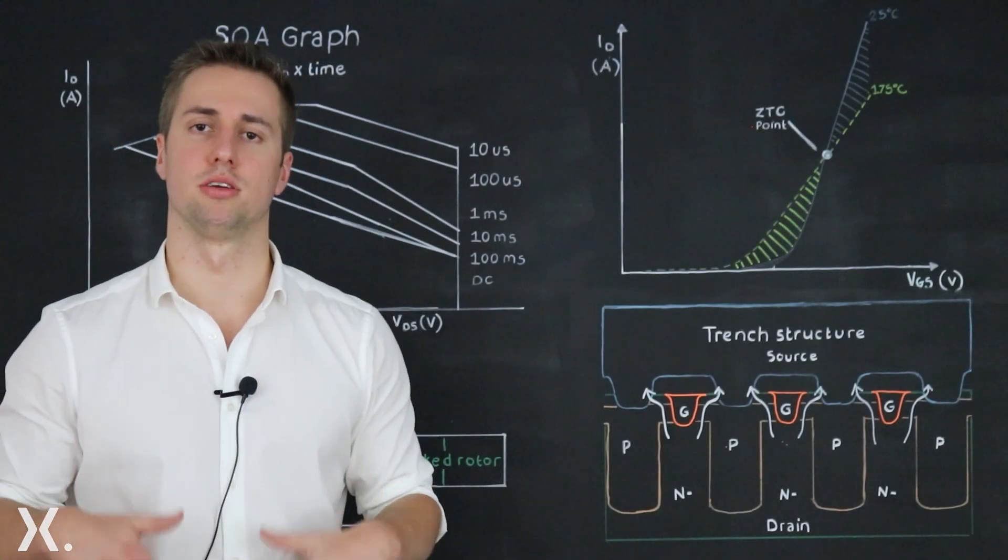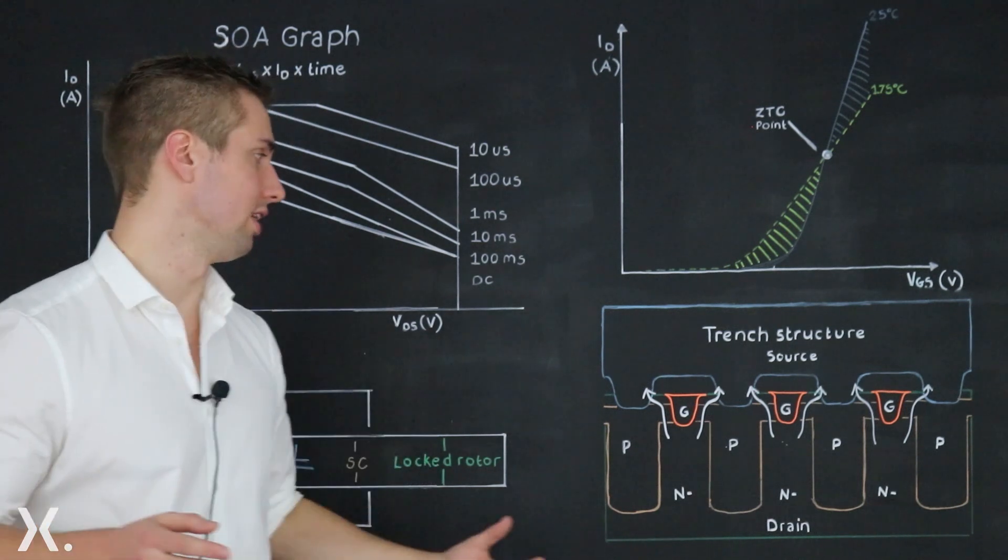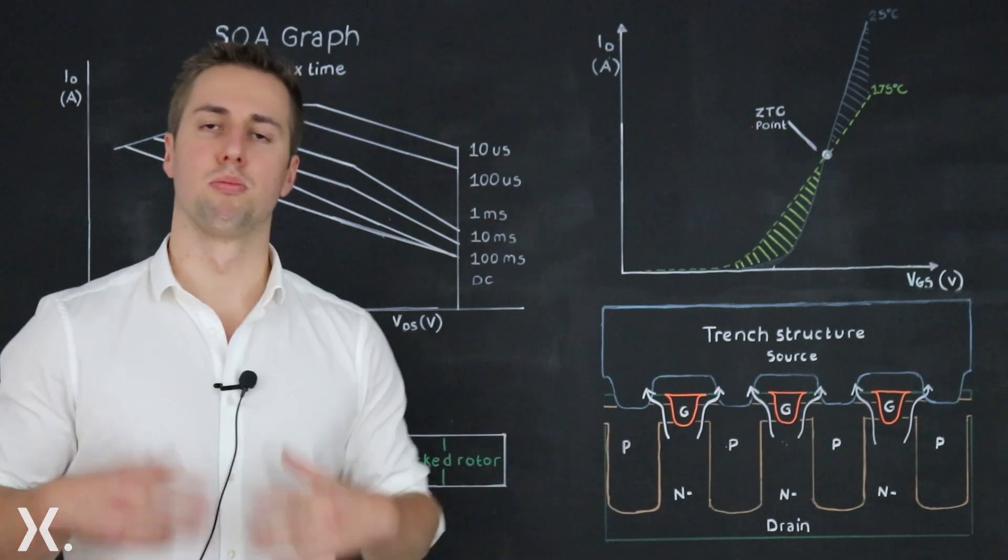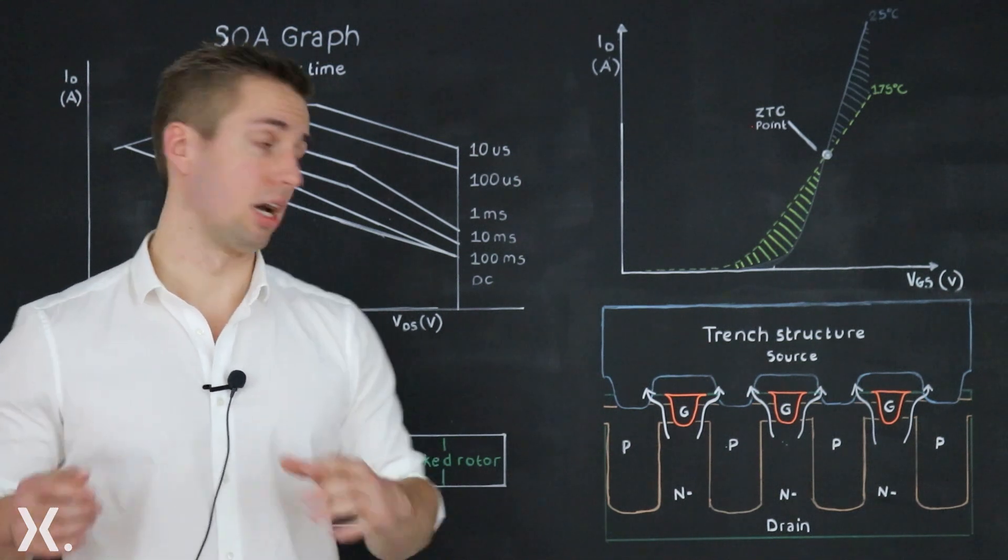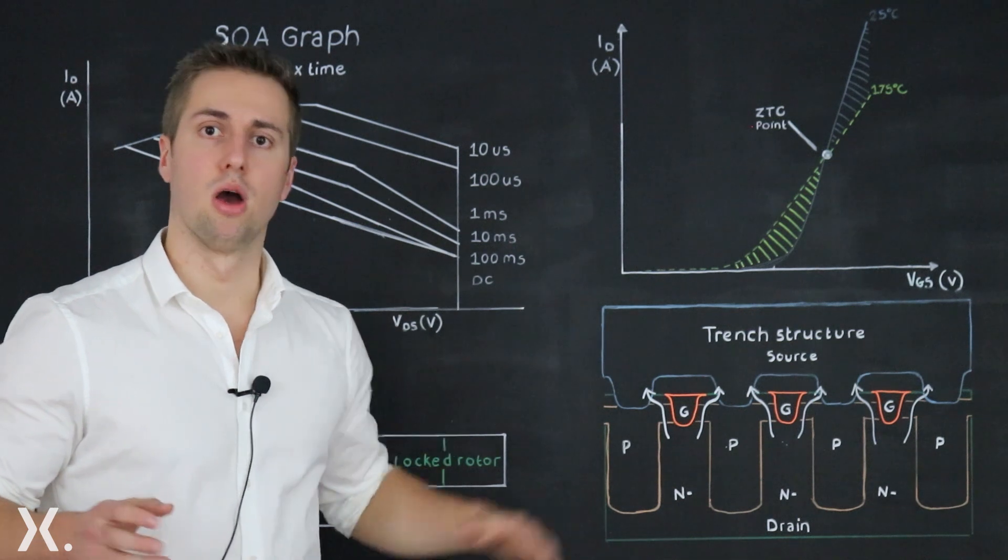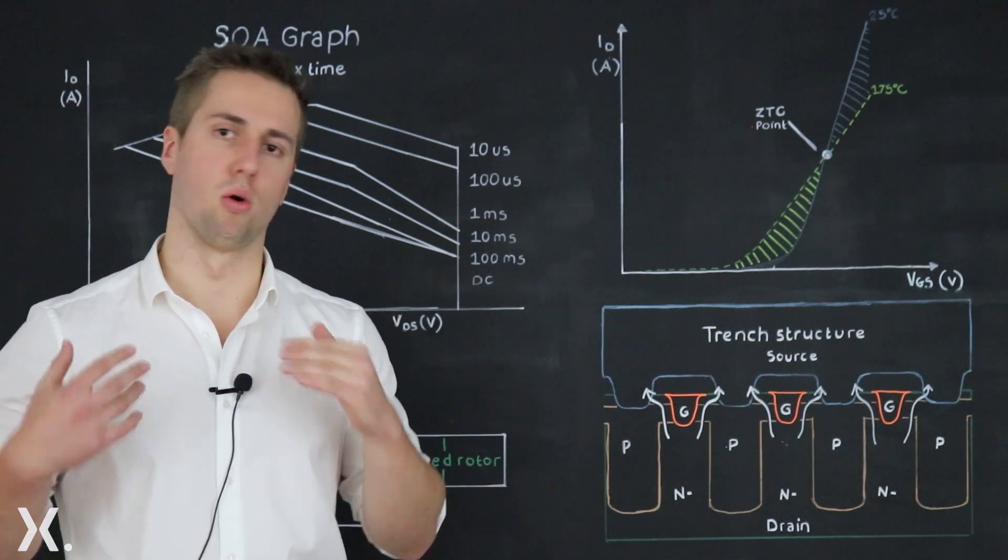In contrast to this Nexperia developed superjunction technology which allows for very low RDS on without the need to change the pitch. Combining this with copper clip package technology which allows for very efficient cooling we can have a very low RDS on and very strong SOA all in one package.